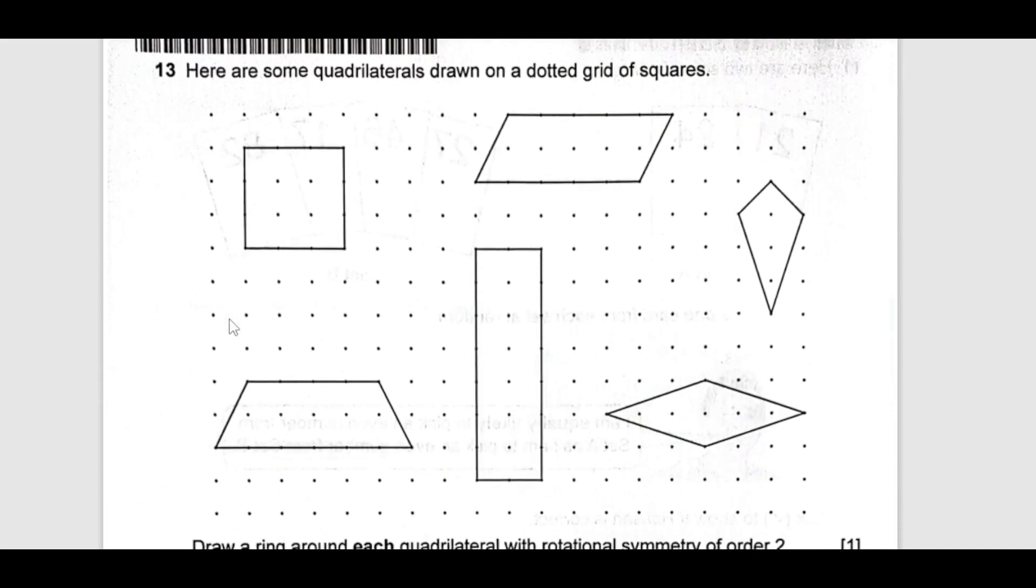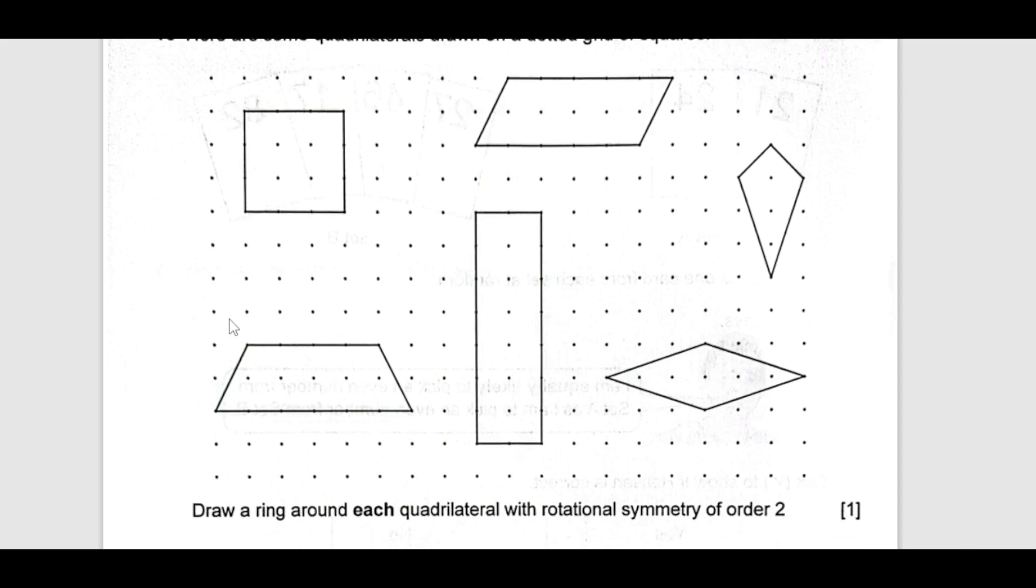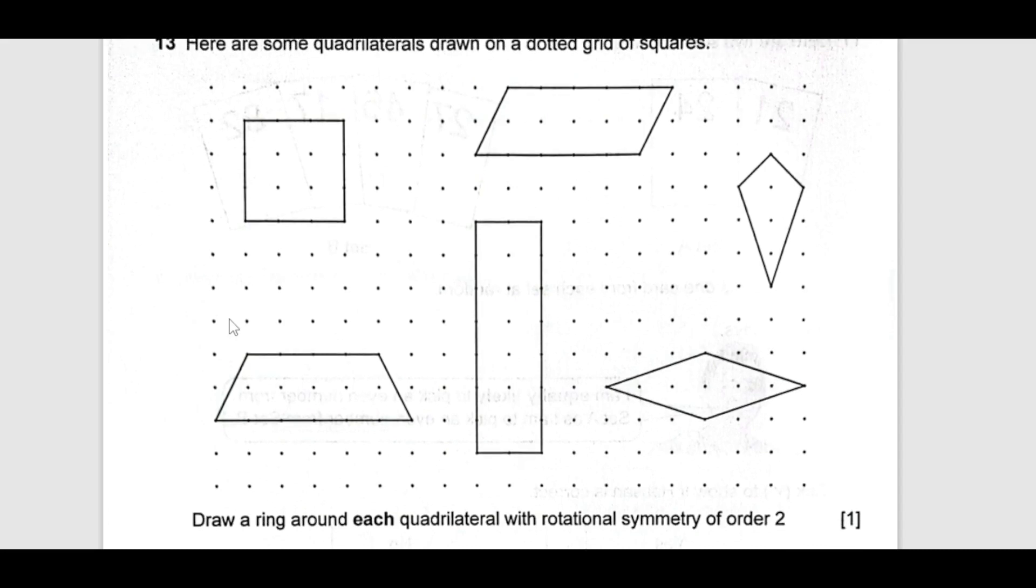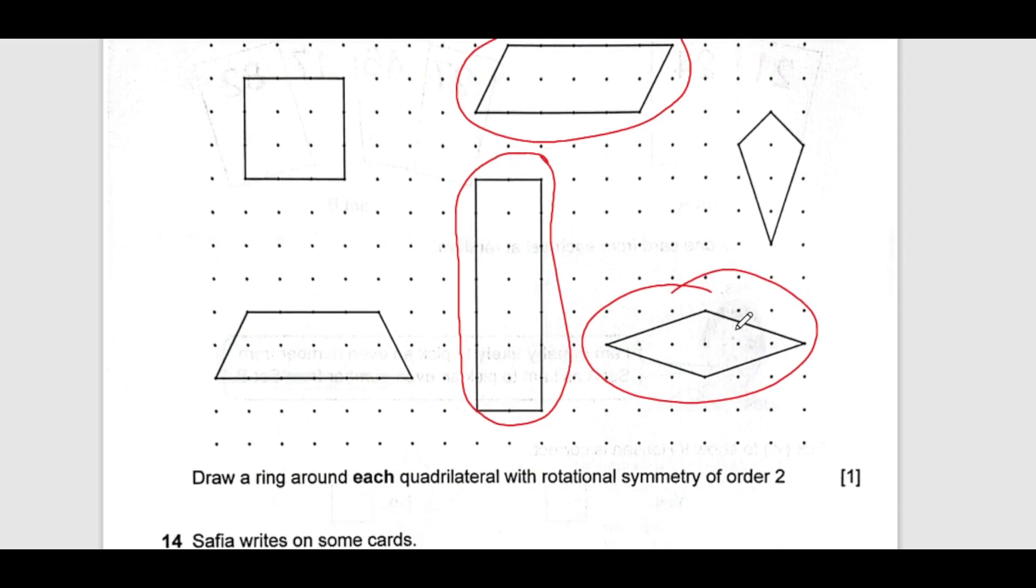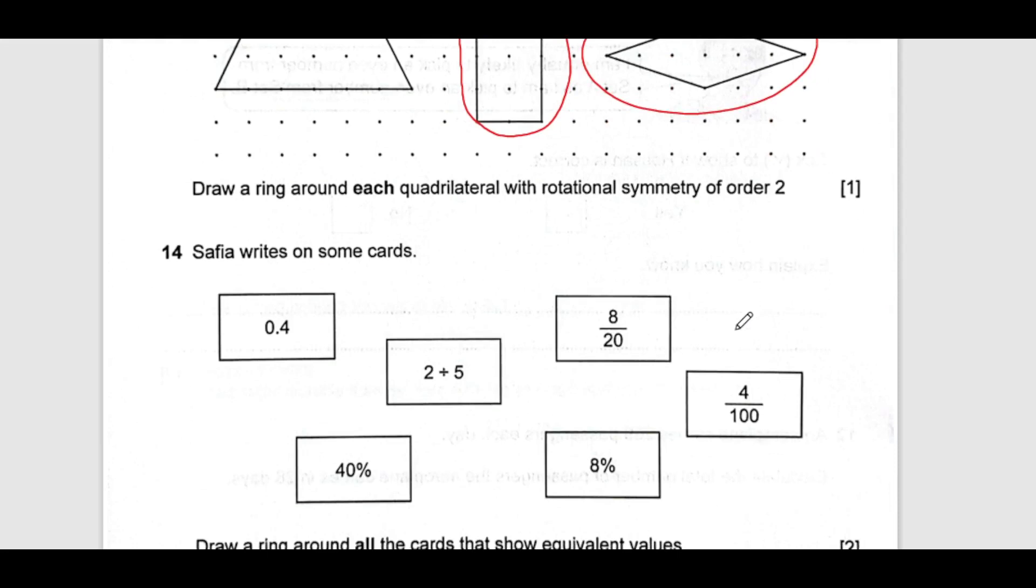Next we have here are some quadrilaterals drawn on a dotted grid of squares. The question is draw a ring around each quadrilateral with rotational symmetry of 2. Rotational order is the symmetry when you rotate a figure and you get same kind of figure when you make it around, turn around 360. These are the figures that have order of 2.